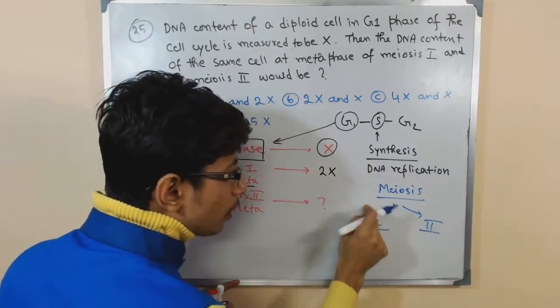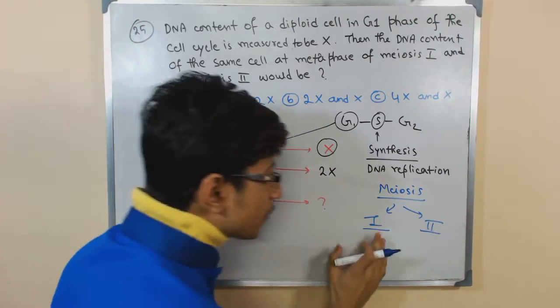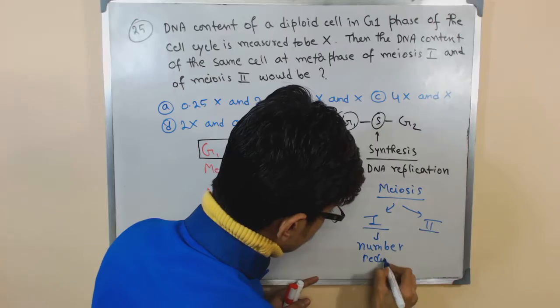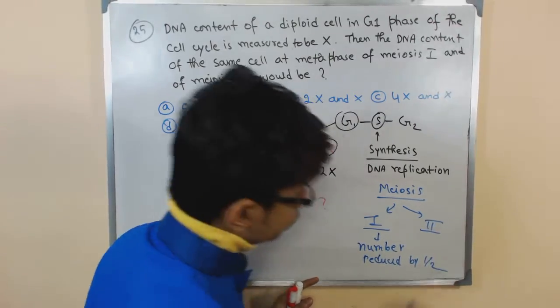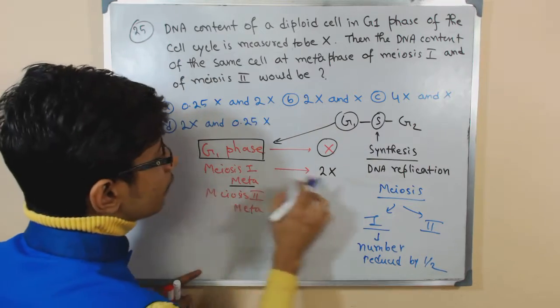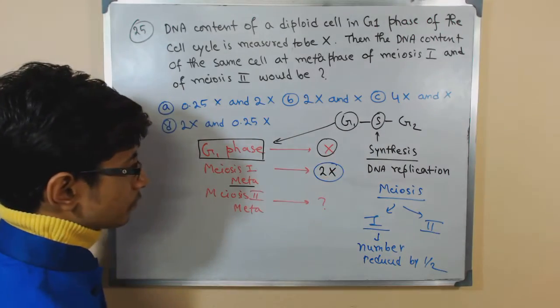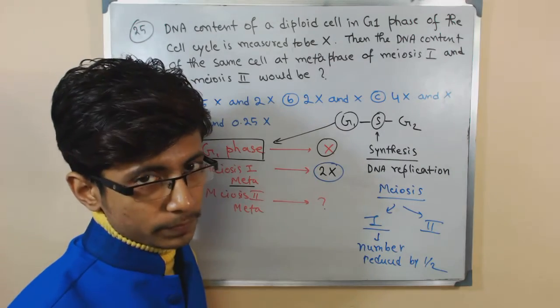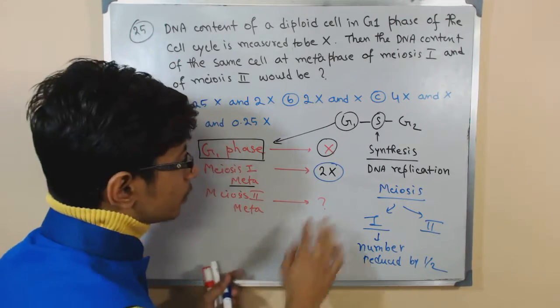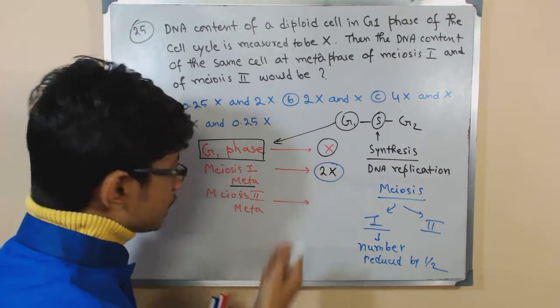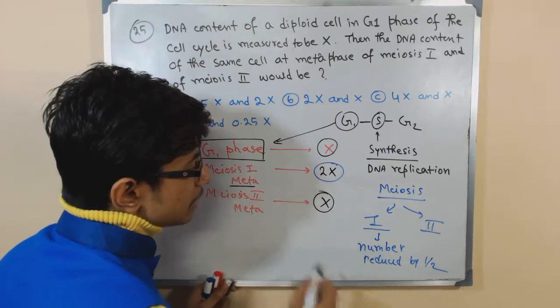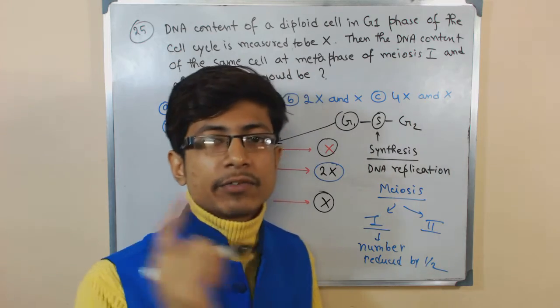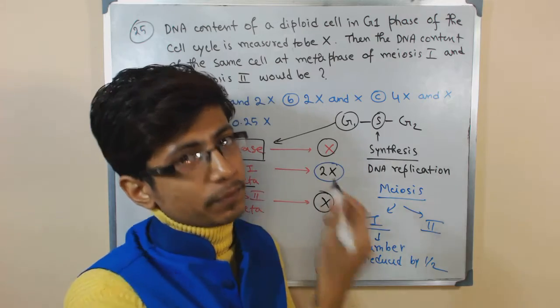In this case, whatever number of chromosome we have before entering into the meiosis 1 process, after the meiosis 1, the number is reduced by half. If we have 2X number of chromosome in meiosis 1, as it is migrating through and passes through the meiosis 1, it will be converted into X number of chromosome. So once it is in meiosis 2 metaphase, that number of chromosome remains X because in meiosis 2, the division is simply just like mitosis division.